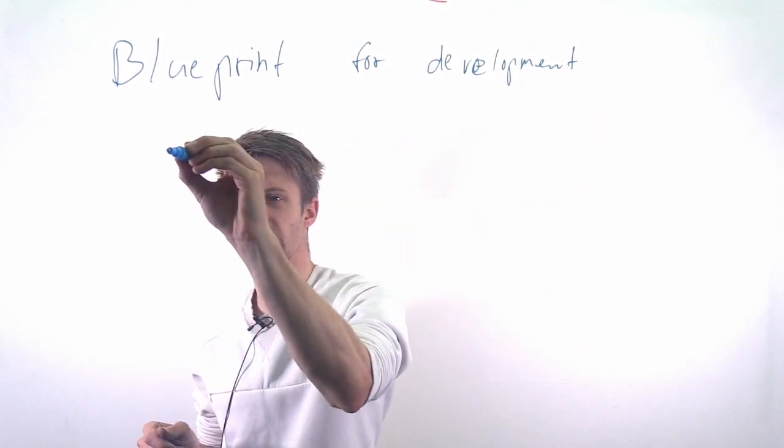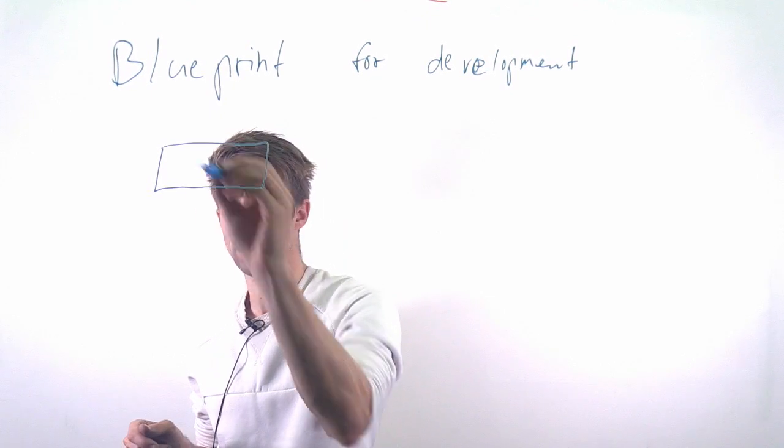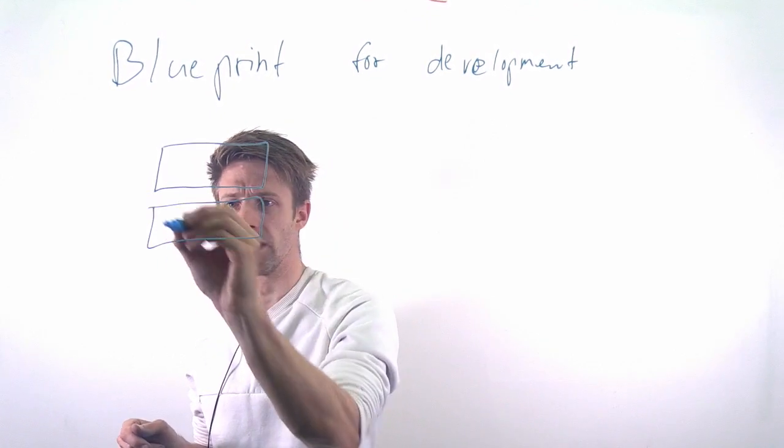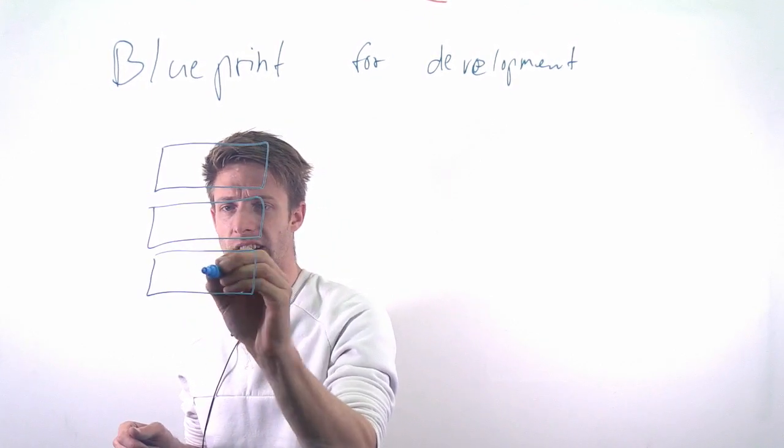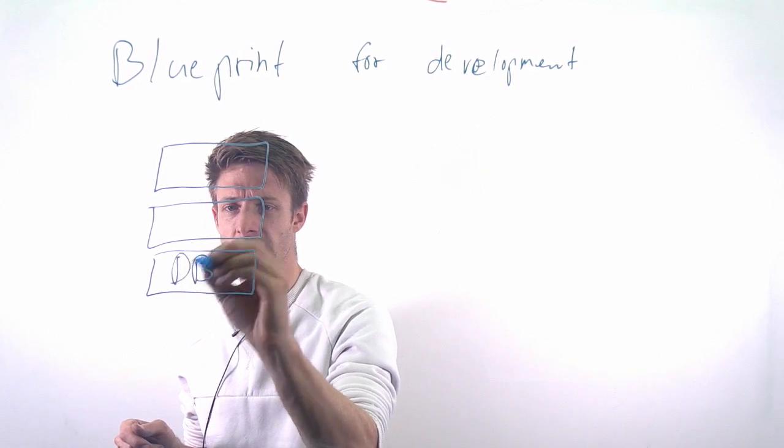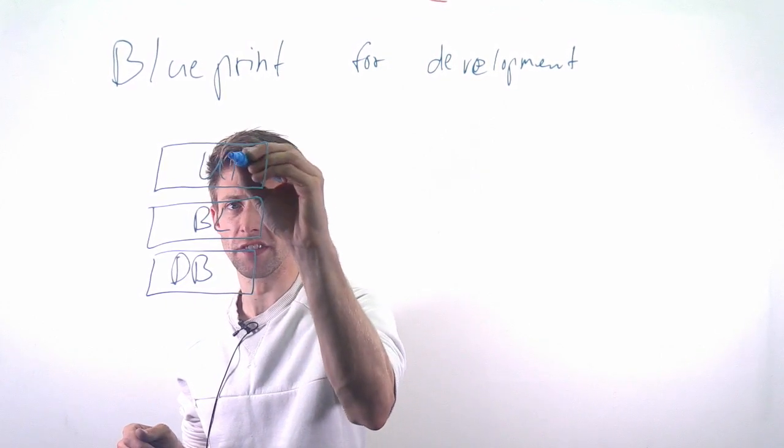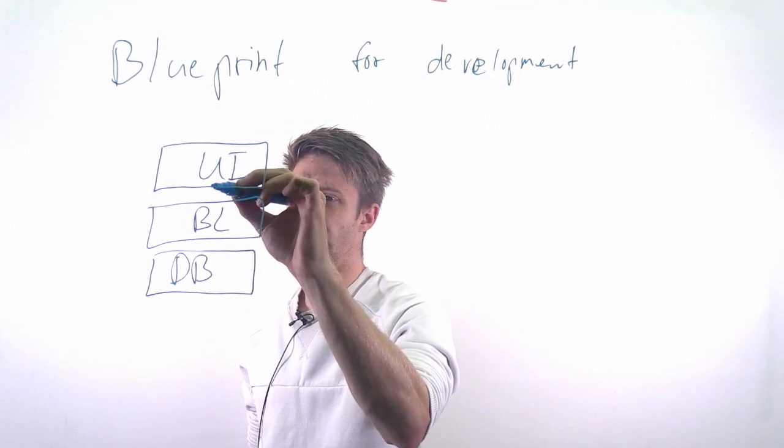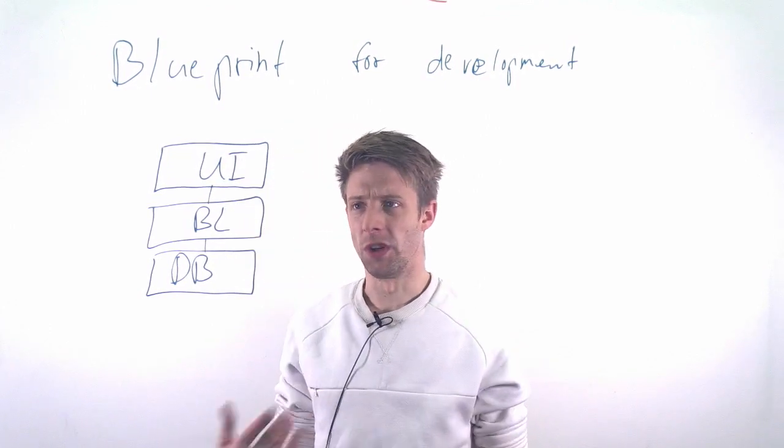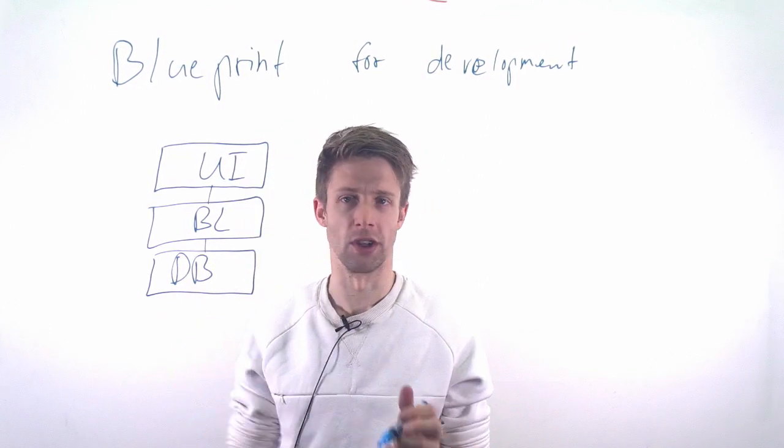So imagine you are using a layered architecture. Let's do the classical three-layer architecture: we have a database, we have the business logic, and we have the user interface. Then very often you also have the teams structured like that.